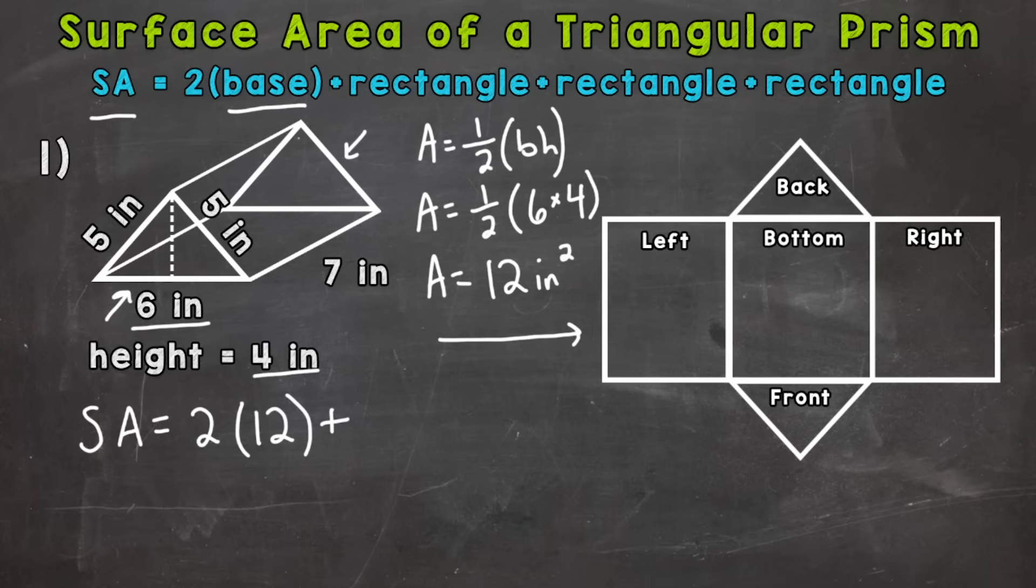So let's get into the rectangles. We have a bottom rectangle, a left rectangle, and a right rectangle. Now the left and right rectangle are the exact same size. The bottom one is different. So let's do the bottom rectangle first. It doesn't matter what order you do them in. You'll get the same answer either way, but we're starting with the bottom. Area equals length times width. So length times width for the area of a rectangle.